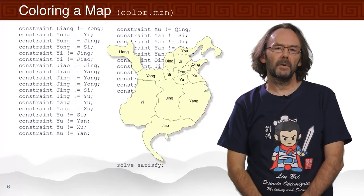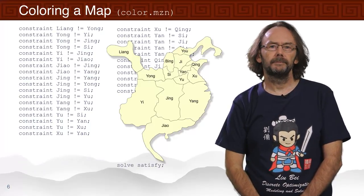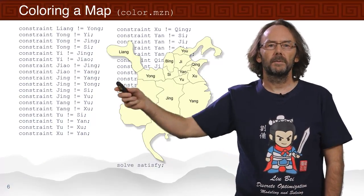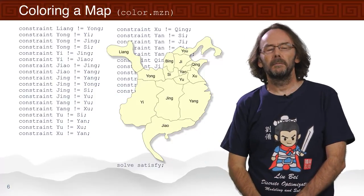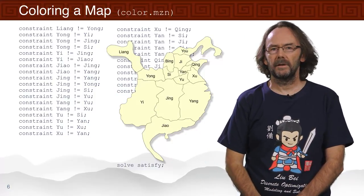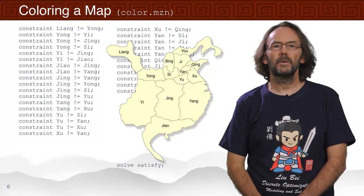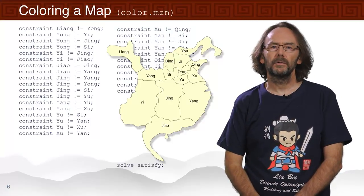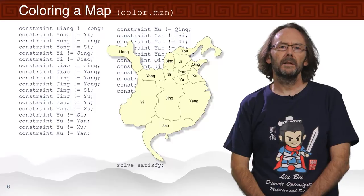We have to write down the constraints of the map. For any two provinces which are next to each other, we must ensure that they have a different colour. We've written down all those constraints — you can see there are so many that we've used a very small font size.